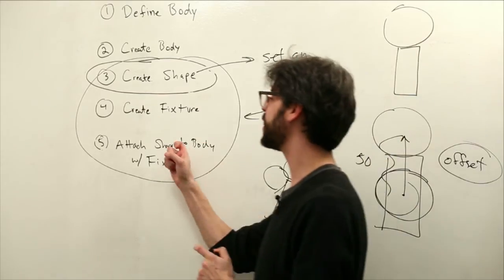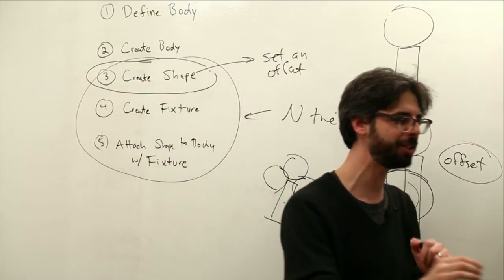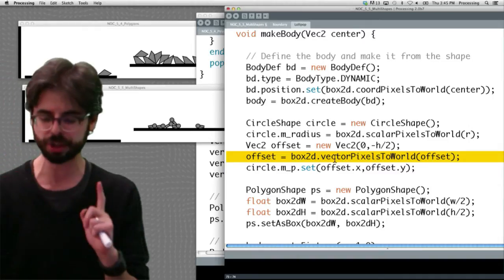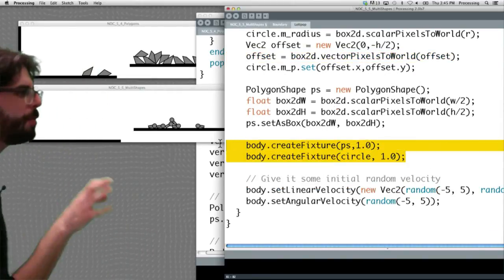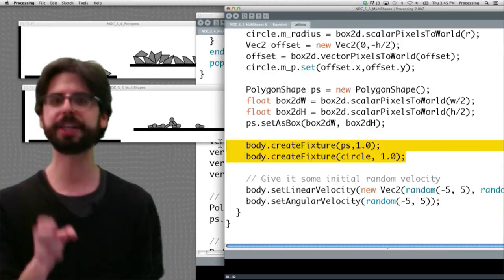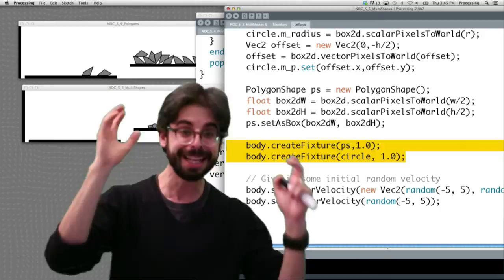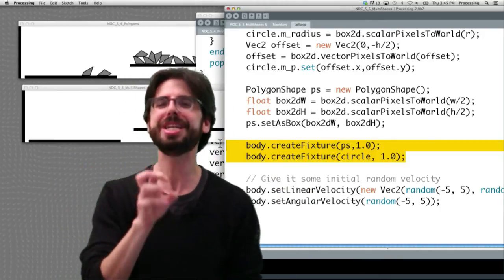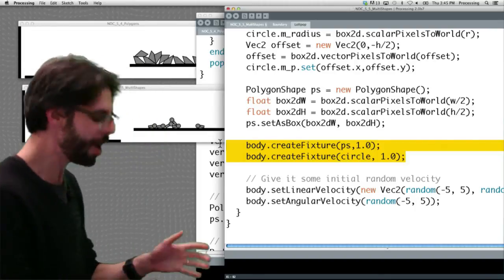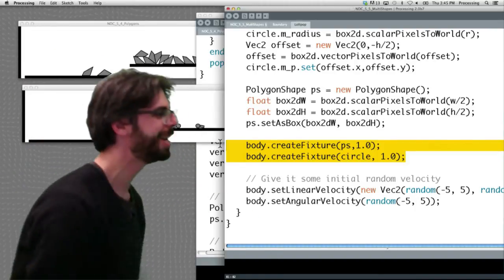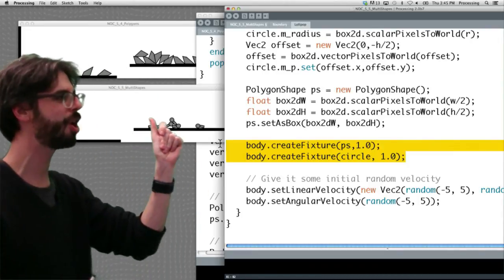And then, remember, we need to attach both shapes to the bodies, each with its own fixture. And one of the things that I haven't mentioned, by the way, is there's code for a fixture shorthand. Look at this. Remember in the other examples we would say fixture definition equals new fixture definition, set the friction, set the restitution, set the density. You can do that if you need to custom manage those physics parameters. But one thing that you can also do is if you just want to use the default friction and the default restitution, you can, in one line of code, attach the shape to the body with a fixture.